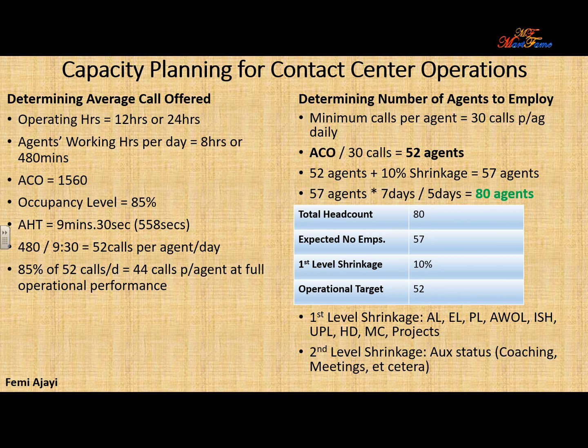The number of working hours for agents will be 8 hours. Translate that into minutes, that will be 480 minutes. The sample data for the average calls offered — that is the average number of calls that a contact center is receiving on a daily basis — let's put that at 1,560 calls per day.